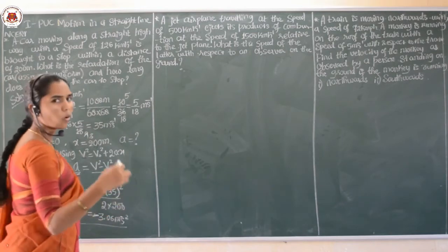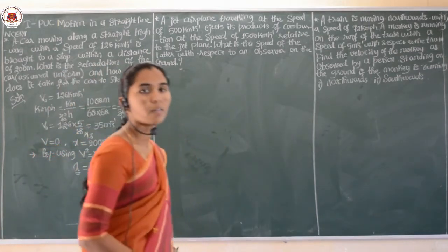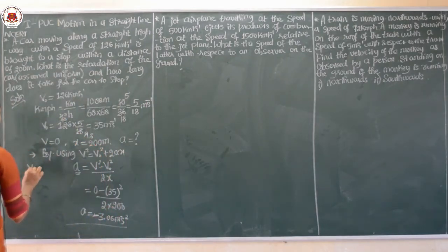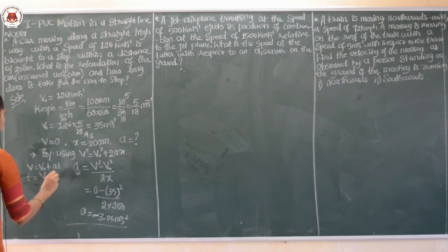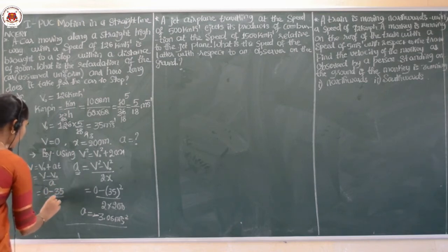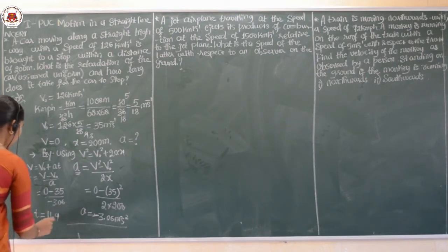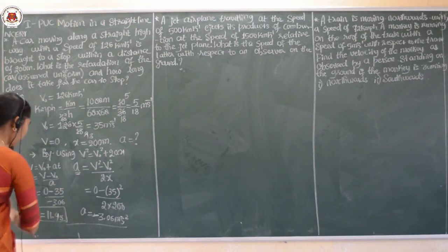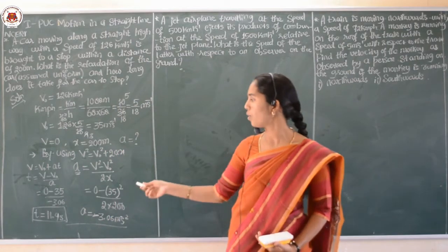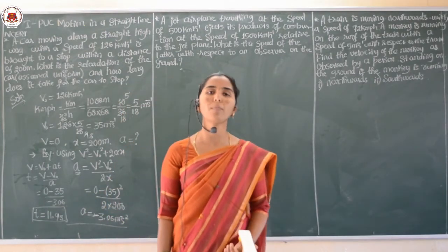Now for the second part — how long does it take for the car to stop? We use the formula v = v₀ + at, rearranged to t = (v − v₀) / a. Substituting: v = 0, v₀ = 35, a = −3.06. So t = (0 − 35) / (−3.06), which gives approximately 11.4 seconds. That is how long it takes for the car to stop.